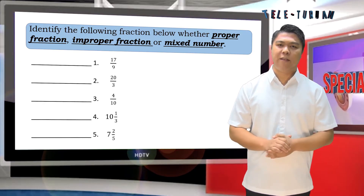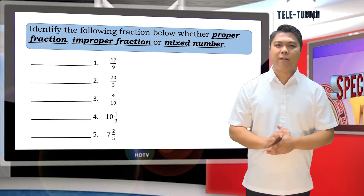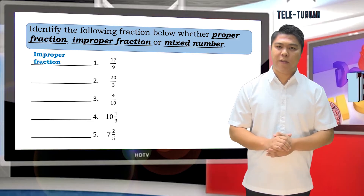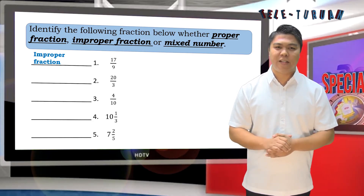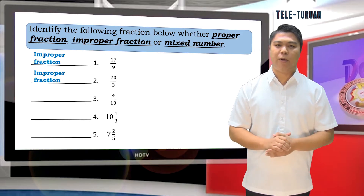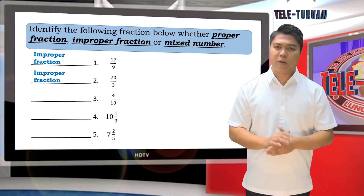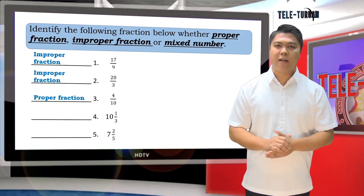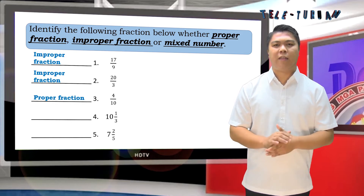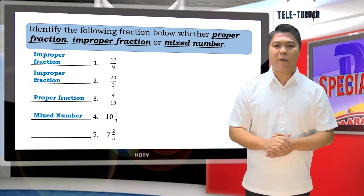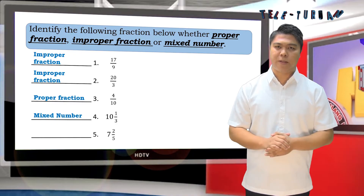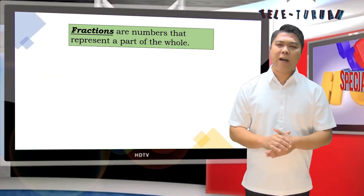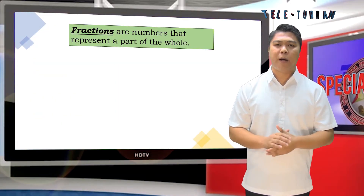Number 1: 17/9 is an improper fraction. Number 2: 20/3 is an improper fraction. Number 3: 4/10 is a proper fraction. Number 4: 10 and 1/3 is a mixed number. Number 5: 7 and 2/5 is a mixed number. Fractions are numbers that represent a part of the whole.